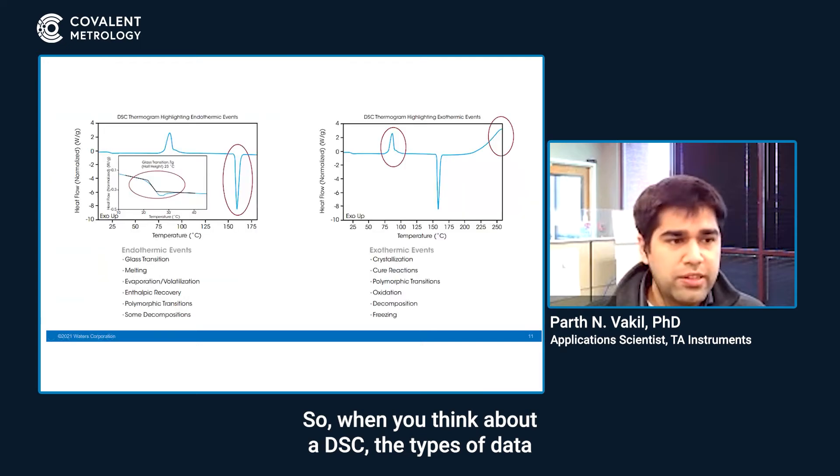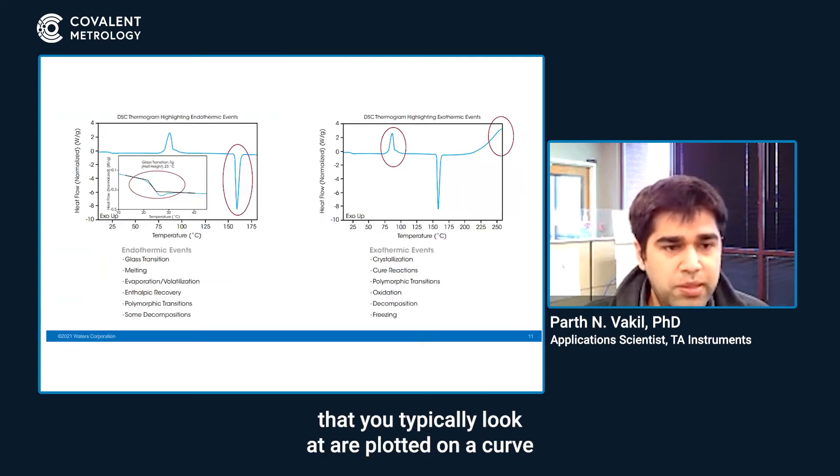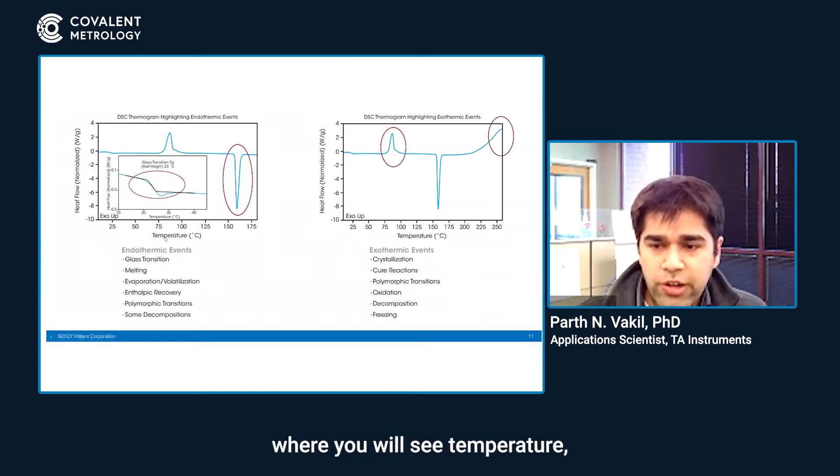When you think about a DSC, the types of data that you typically look at are plotted on a curve where you will see temperature along the x-axis and what we call normalized heat flow on the y-axis. The graphs show you peaks and valleys.